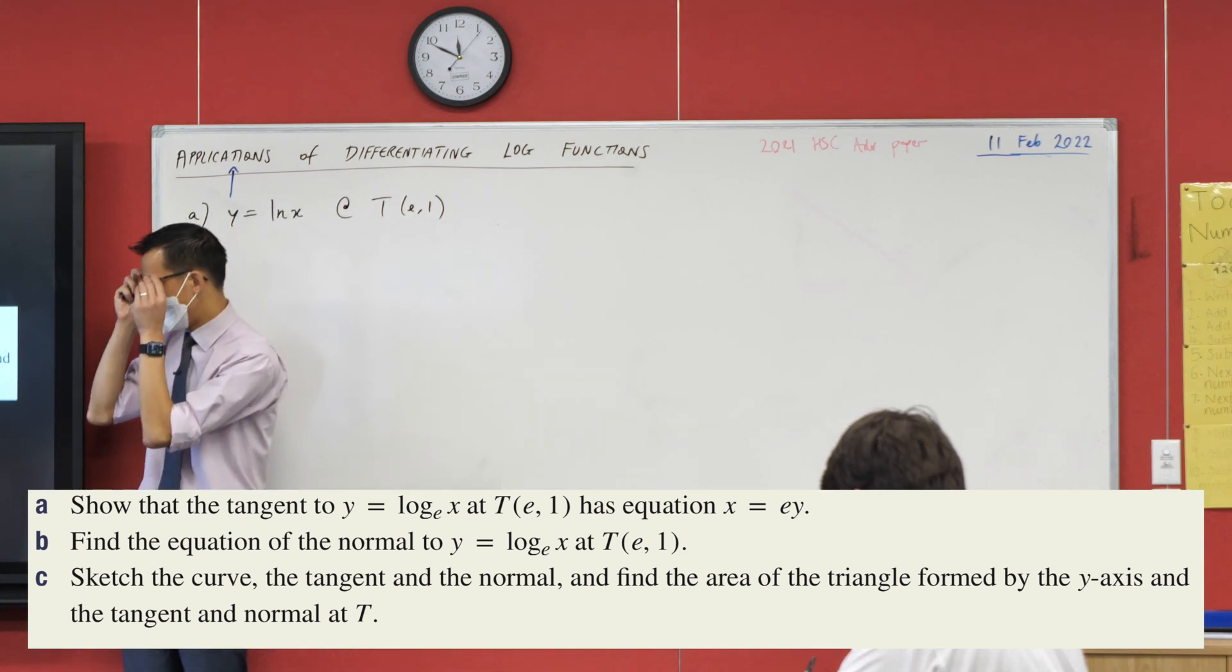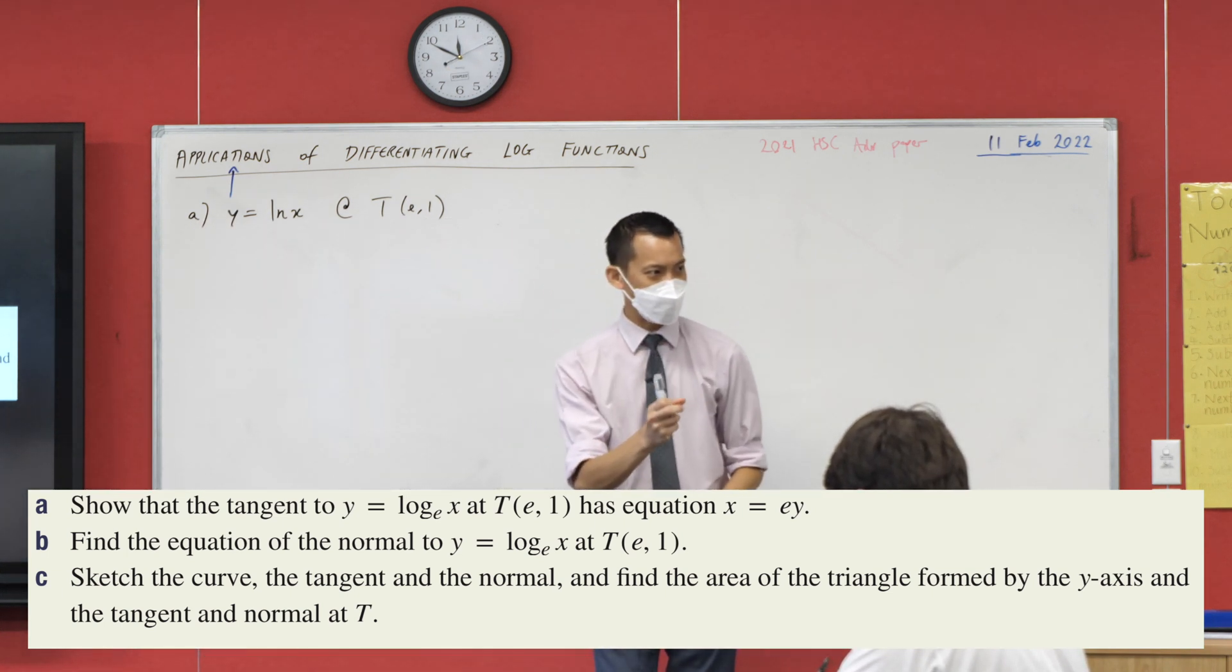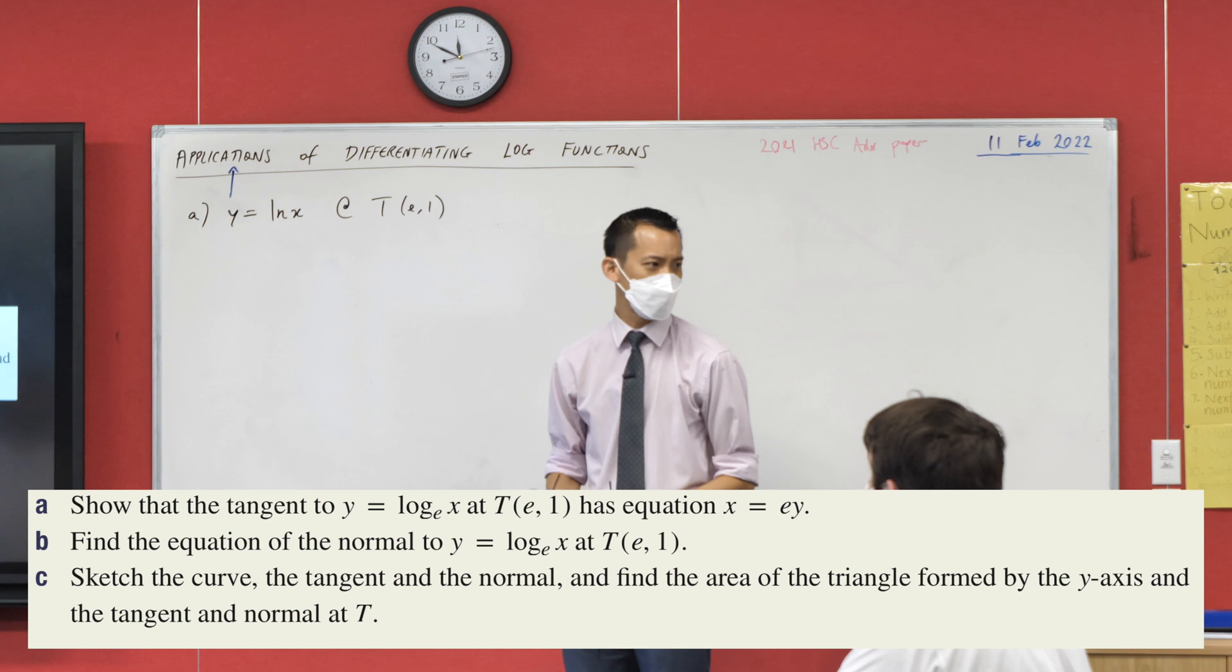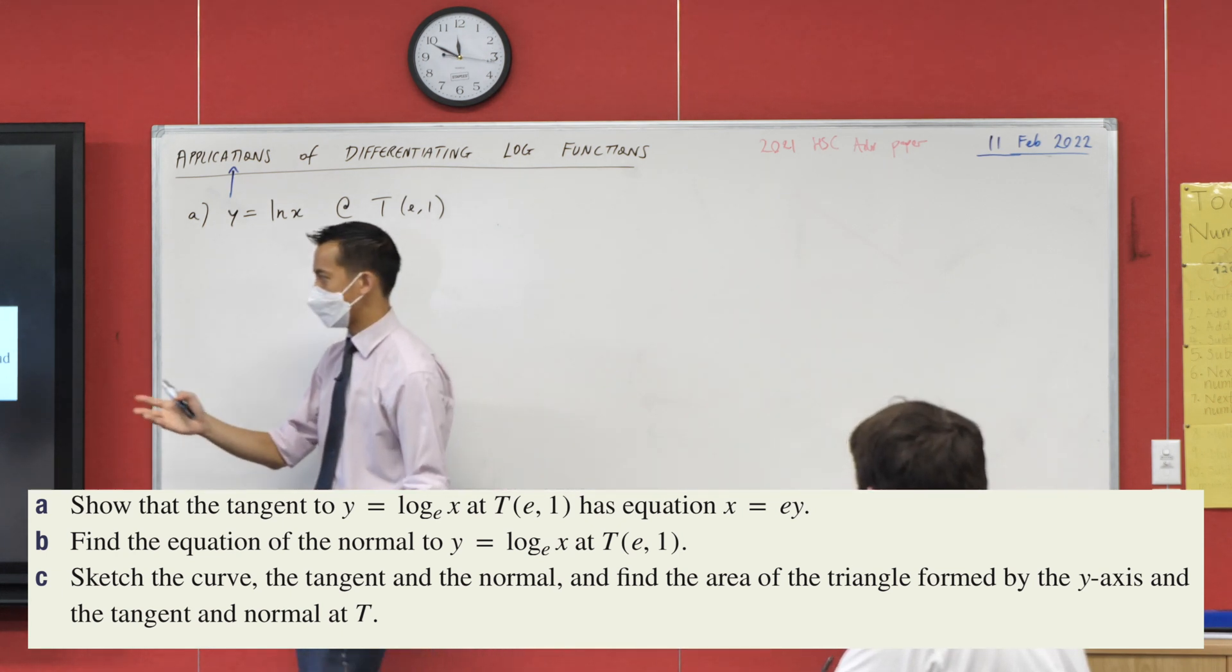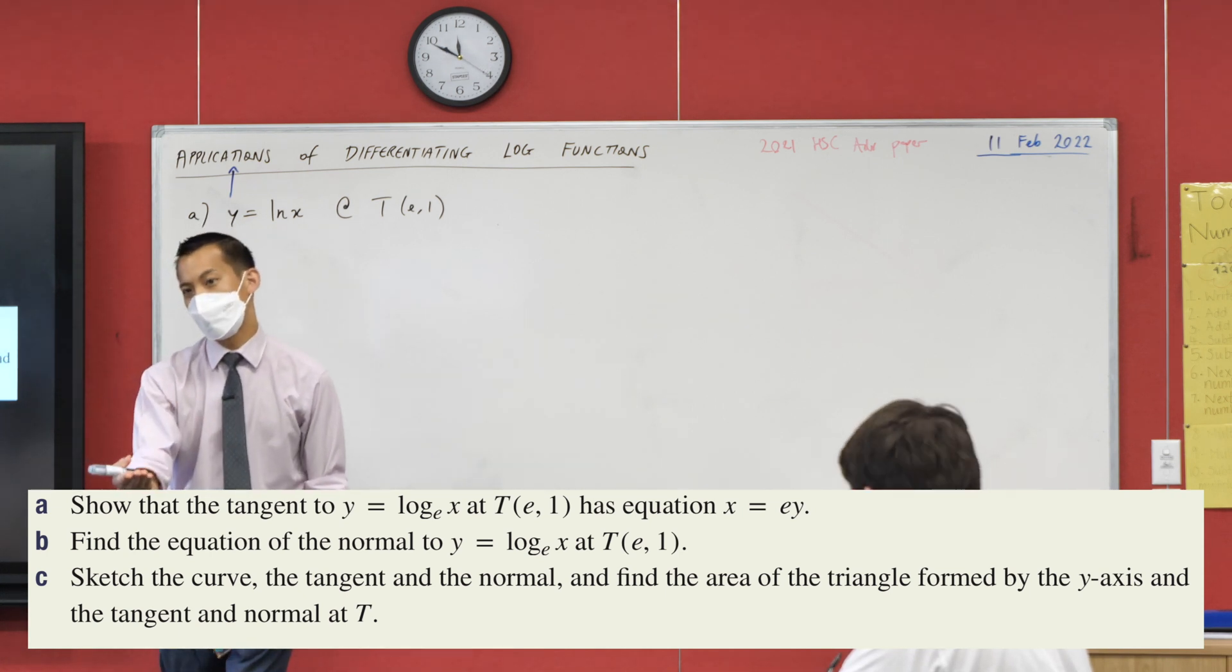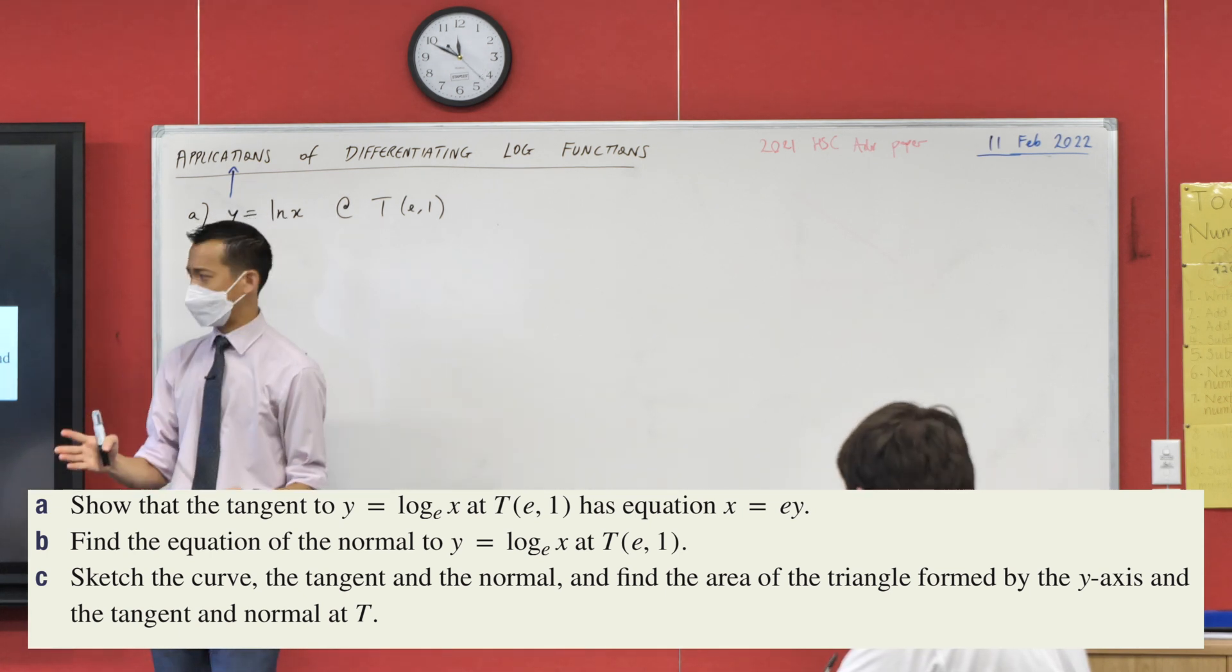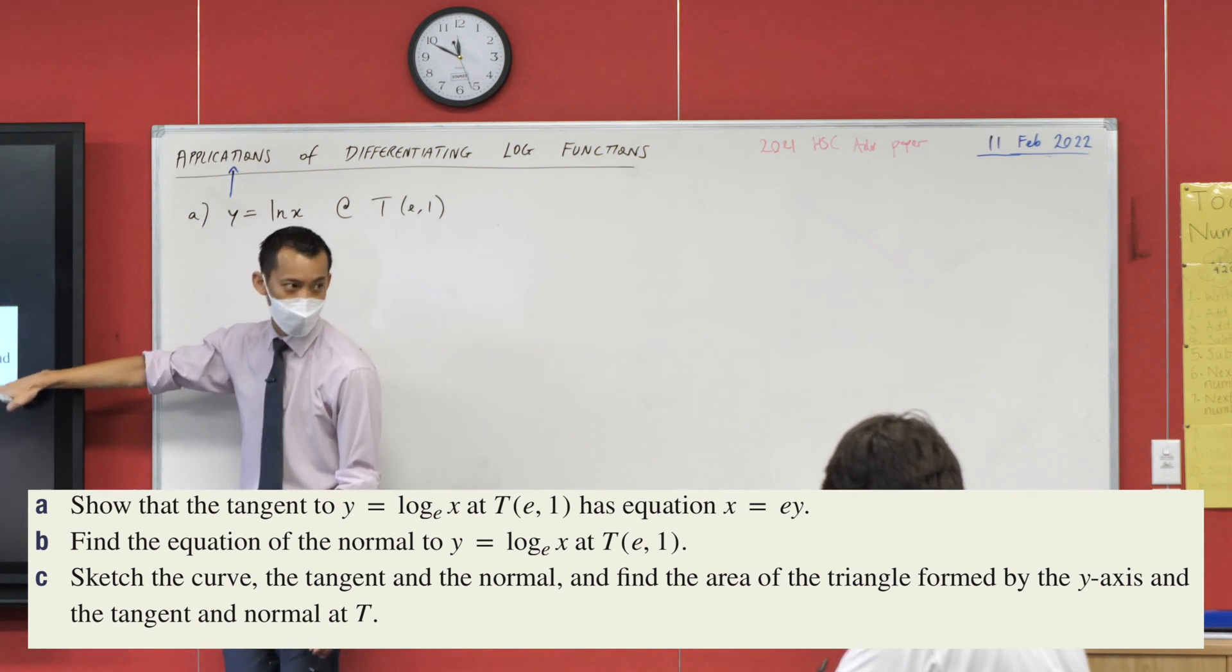Show that the tangent to this at this particular point - they name a point t with coordinates (e, 1) - show that tangent has this particular equation. Now first thing to note: what's the operative word here, what's the verb, what's the thing they're asking you to do? Show that. There are zero points for actually getting this result. They're like, we know what the result is, I want you to prove it. We've talked about this before: in such a case that you actually can't prove it, you could still use that result for subsequent parts.